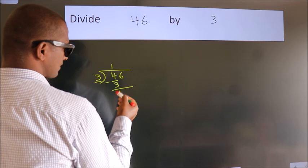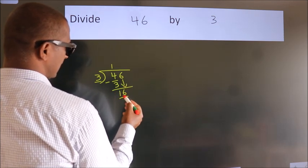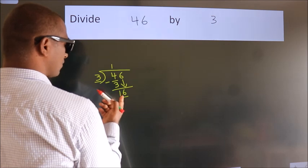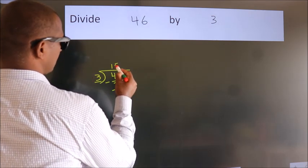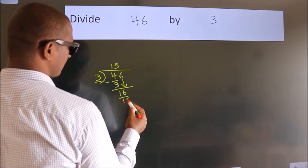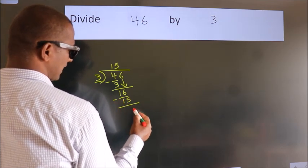After this, bring down the beside number. So, 6 down. So, 16. A number close to 16 in the 3 table is 3 fives, 15. Now we subtract. We get 1.